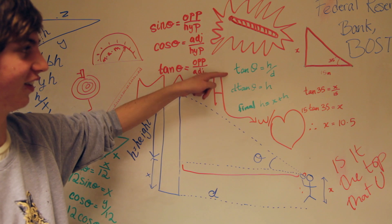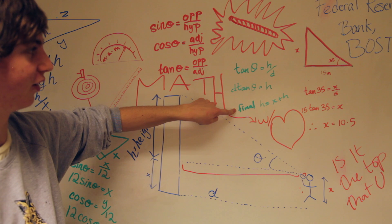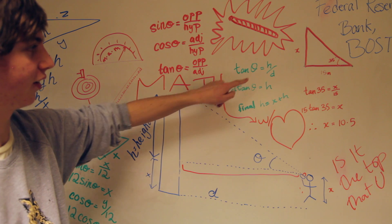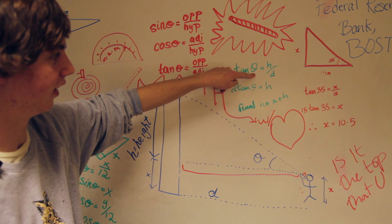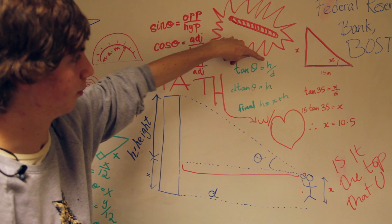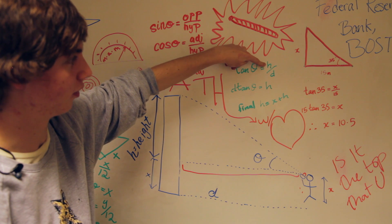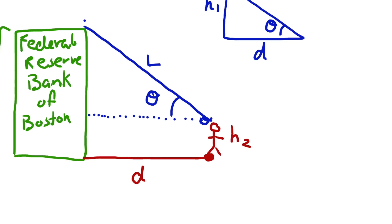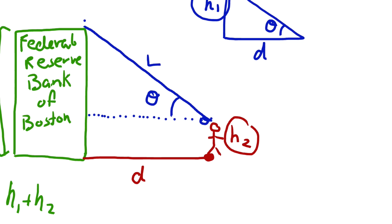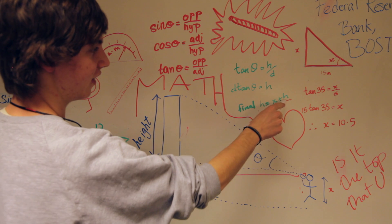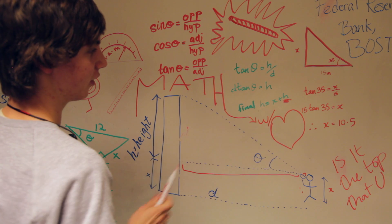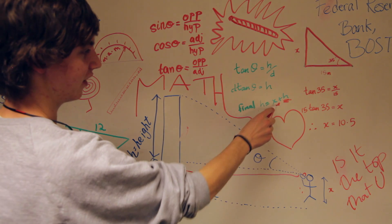We put the values into our equation — the angle goes there and the height of the building comes out there. It's hard to see the real numbers, but that was our mathematical process. That result was the height of the building, and then we had to add our own height as well.